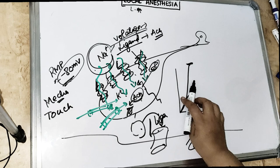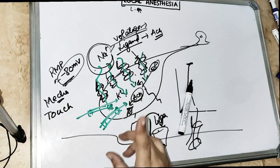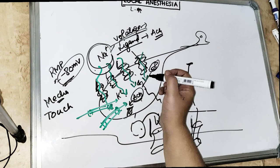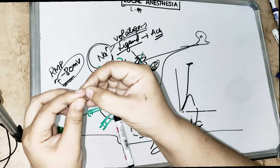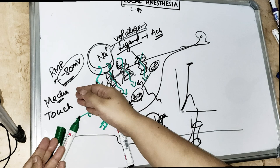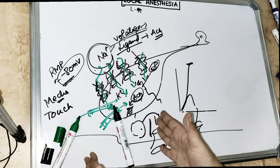In local anesthesia, LA blocks these sodium gated channels. When LA blocks the sodium gated channel, it blocks from outside and also from inside. Once these channels are blocked, no impulse is coming. When no impulse is coming, there is no pain sensation. When these channels are stopped and not responding, there is no transfer of pain to the central nervous system and we don't feel the pain impulse. This is the effect of local anesthesia.